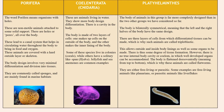Let us start with our first classification: Porifera. The pictures shown are just for reference to help remember examples and understand characteristic properties. The word Porifera means organisms with holes. These are non-motile animals attached to some solid supports and there will be pores all over their body. These pores lead to a canal system that helps in circulating water throughout the body to bring in food and oxygen.